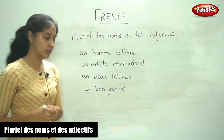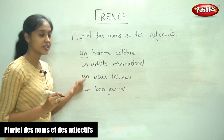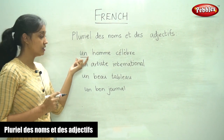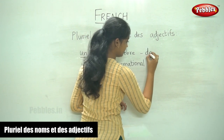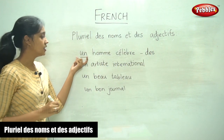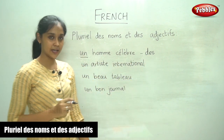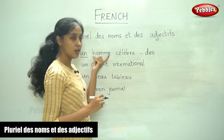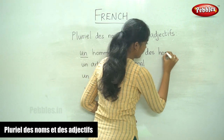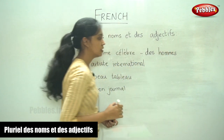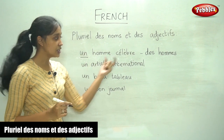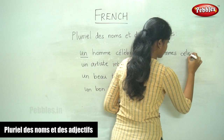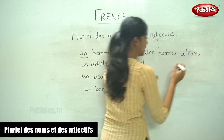Now if you want to write this in the plural form, let us look at it word by word. The first word is 'un', which is the indefinite article. In the plural form, 'un' becomes 'des'. The noun 'nom' in the plural form becomes 'noms'. And the adjective 'célèbre' must also be written in the plural form in French.